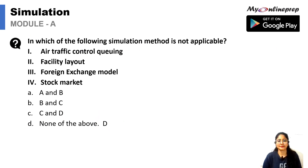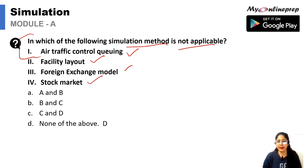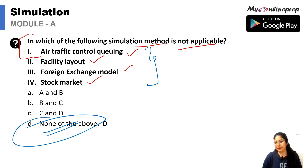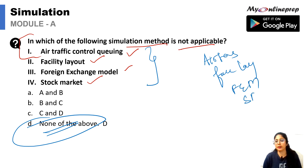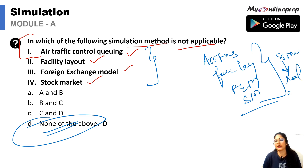In which of the following is simulation method not applicable — air traffic control, facility layout, foreign exchange market? I would suggest that simulation is a model that is applicable to all of these. None of the above is correct because whether it is air traffic control, facility layout, foreign exchange, or stock market — simulation is used in all these places since we deal with real models and make predictions.